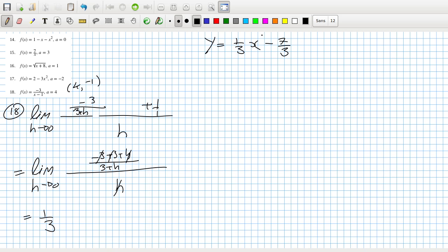Let's check. 1 over 3 times 4 minus 7 over 3. Yes, that is minus 1. I sound surprised that I got it. And, okay, so that looks, hopefully that's right for 18 now.